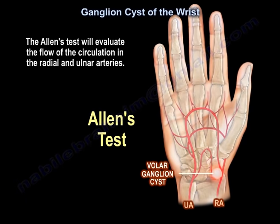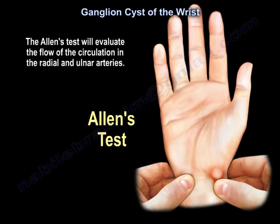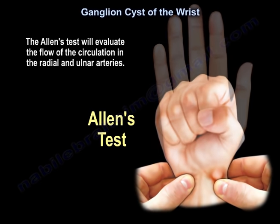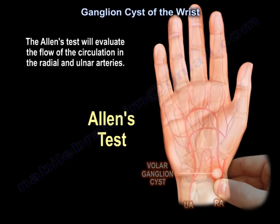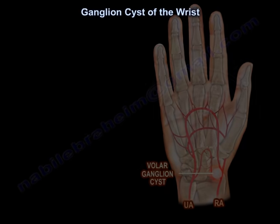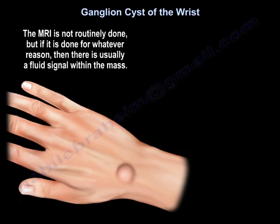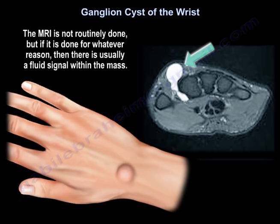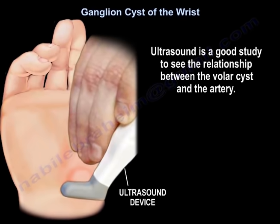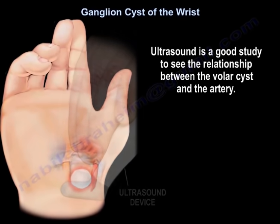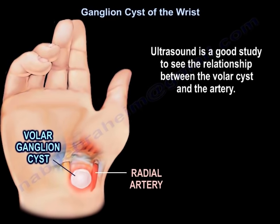The Allen test evaluates the flow of circulation in the radial and ulnar arteries. MRI is not routinely done, but if performed, there is usually a fluid signal inside the mass. Ultrasound is a good study to see the relationship between the volar cyst and the artery.